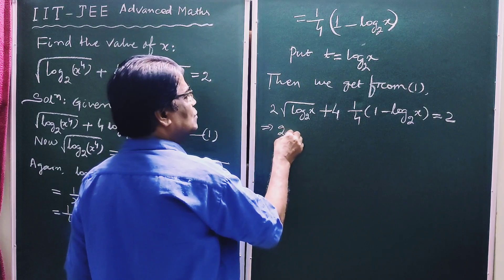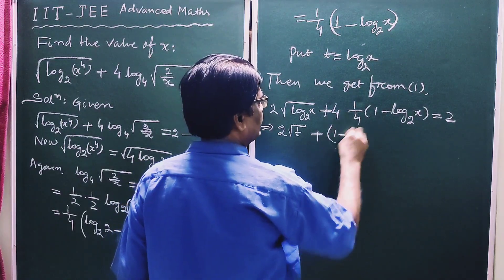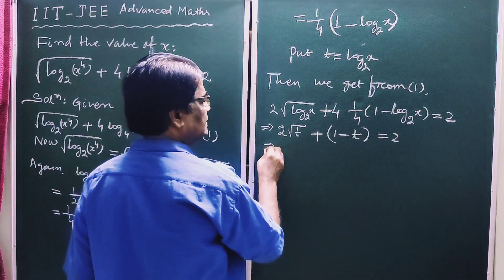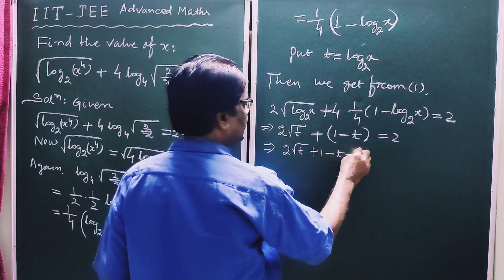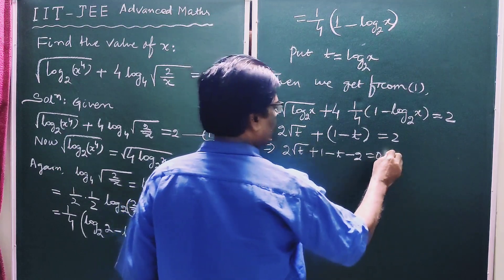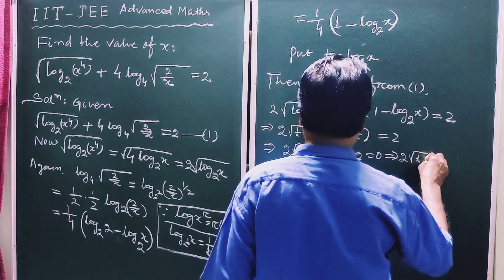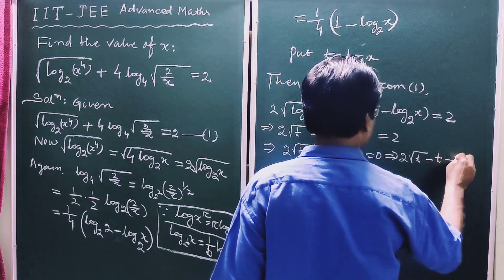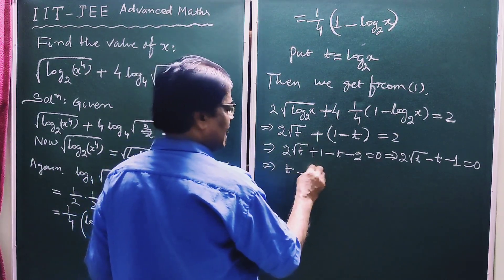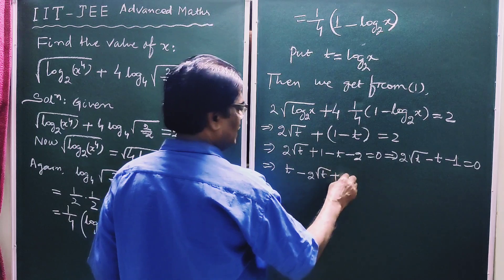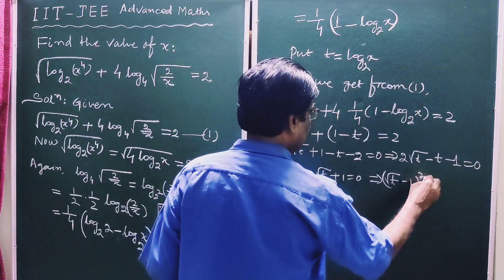So this implies 2 root t plus 1 minus t minus 2 equals 0, which further simplifies to 2 root t minus t minus 1 equals 0. This factors as (root t minus 1) whole squared equals 0.